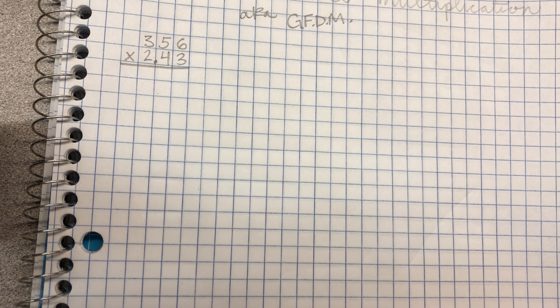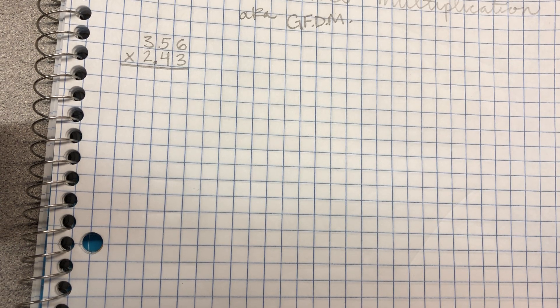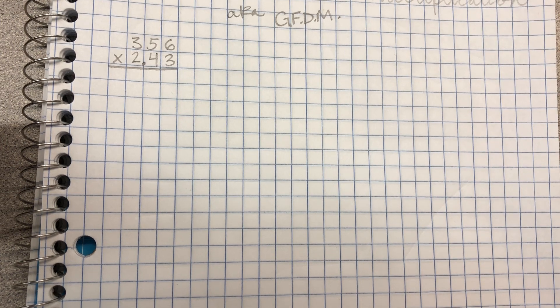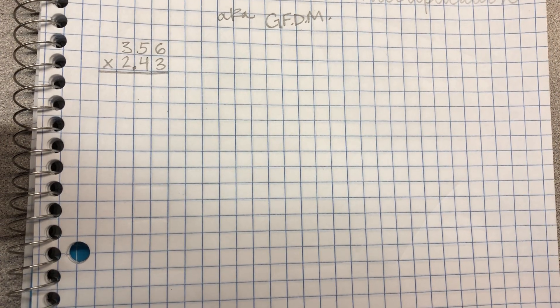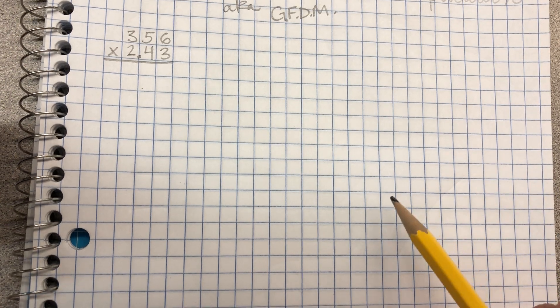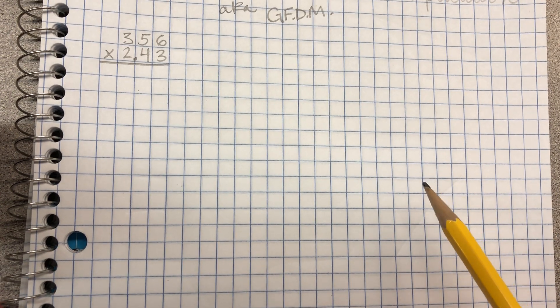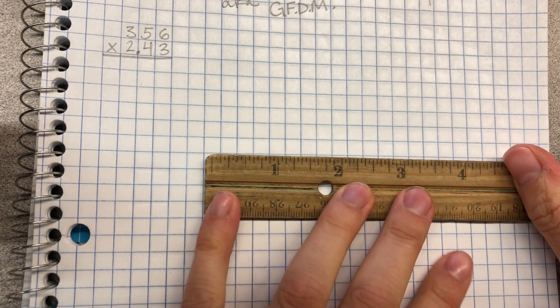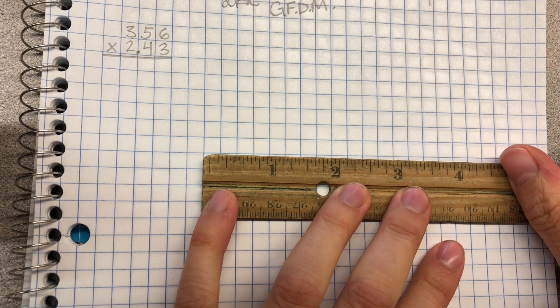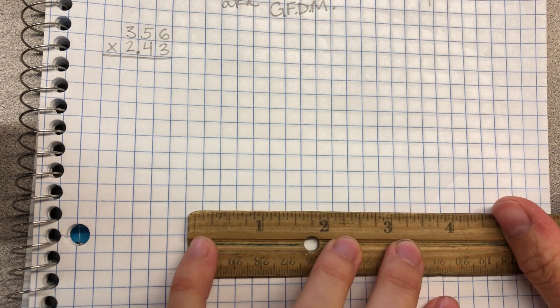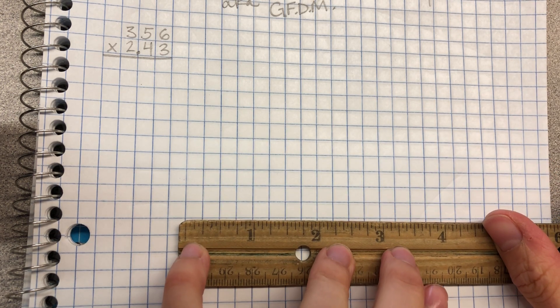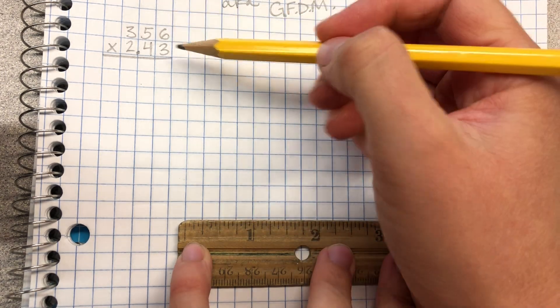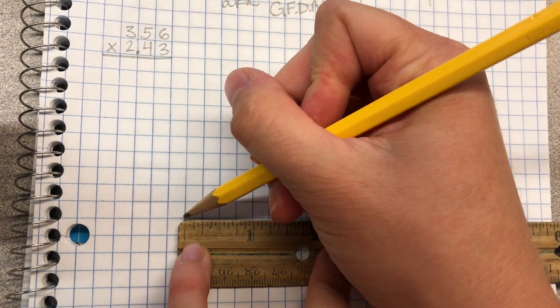Now essentially what we're going to be doing here is creating a miniature decimal checkerboard on our paper to help us solve these problems. So this first problem we have here is 356 times 2 and 43 hundredths. So just like I would with regular GFM I'm going to get out my straight edge. I'm going to start down a little bit here and start with my multiplicand which here is 356.